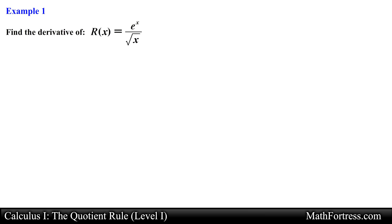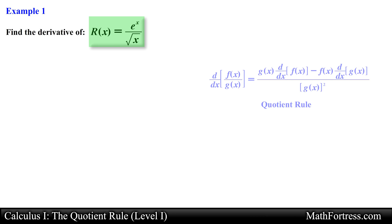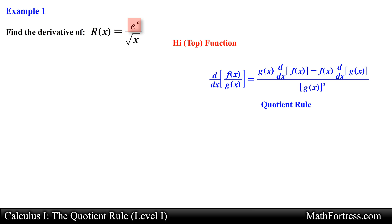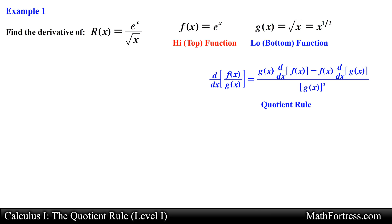Let's practice with a couple of examples. Find the derivative of r of x equals e to the x over the square root of x. I hope you recognize this function — we found the derivative of this function during the first product rule video. It turns out we can also find the derivative using the quotient rule. Similar to the product rule, we first identify f of x, which is the function on the numerator — the high function — which is the natural exponential function.